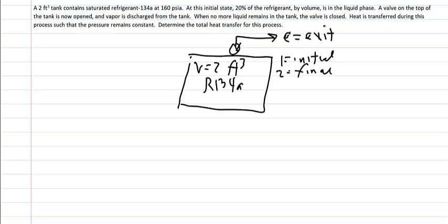We are given the initial pressure: P1 is 160 PSIA. We are told that at this initial state, 20% of the refrigerant by volume is in the liquid phase. That means 80% is in the vapor phase, but that is not the quality. We need the quality to find thermodynamic properties, but we must not confuse a volume percentage with a mass percentage. So we will use this information to find the quality — don't assume the quality is 80%, it is not.